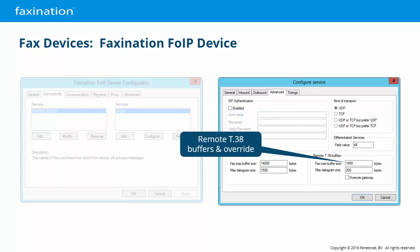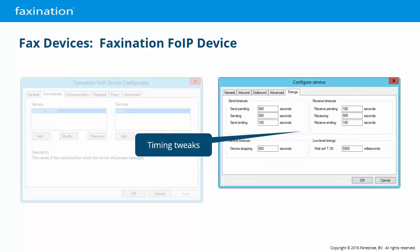You can specify the maximum buffer size and maximum datagram size of the remote gateway when the gateway doesn't provide them, and also enforce these settings whether or not the remote gateway provides them. Finally, on the Timings tab, we can tweak some send and receive timings and timeouts. These settings are all about interoperability, and you're expected to be working with Finestre support if you're having the kind of issues these tweaks would resolve. Our defaults are based around what we know works with Cisco gateways. The FaxNation FOIP device connector is certified by Cisco, and they adhere to the T.38 specifications better than most.